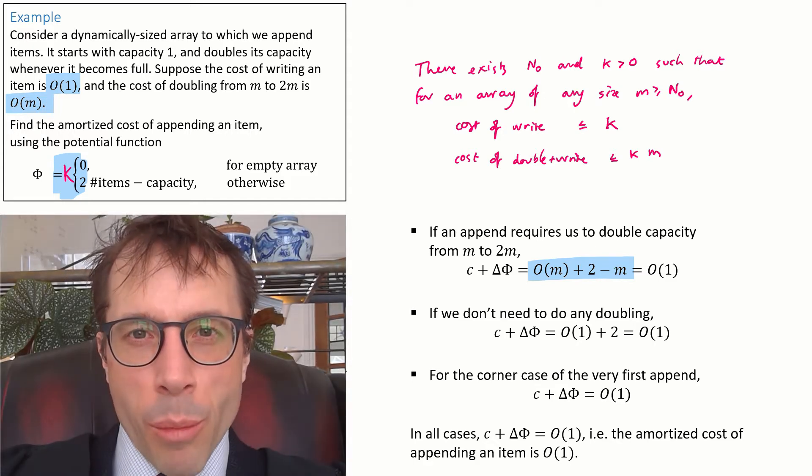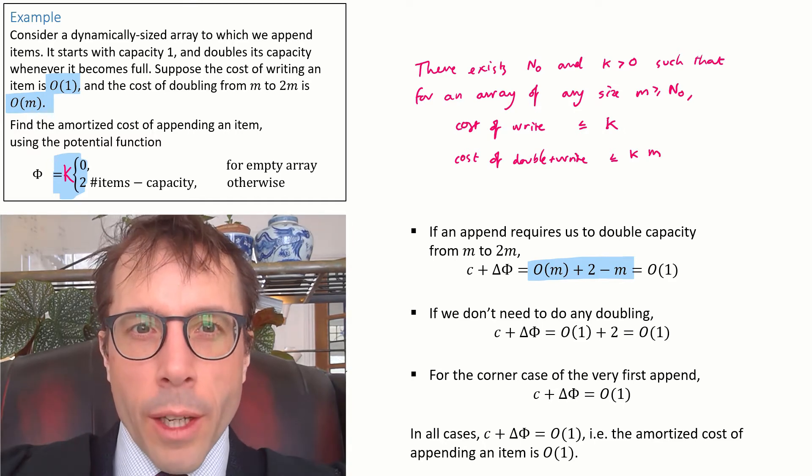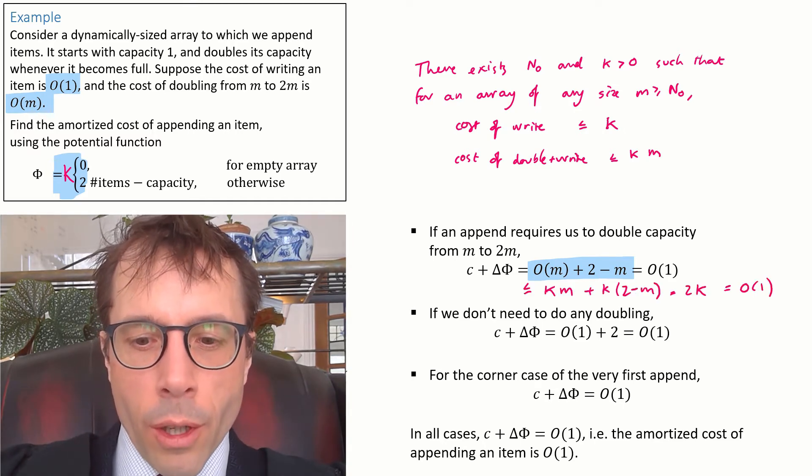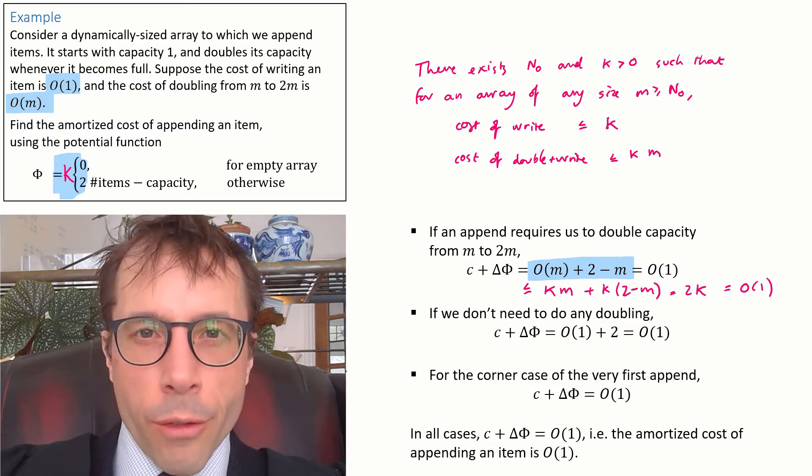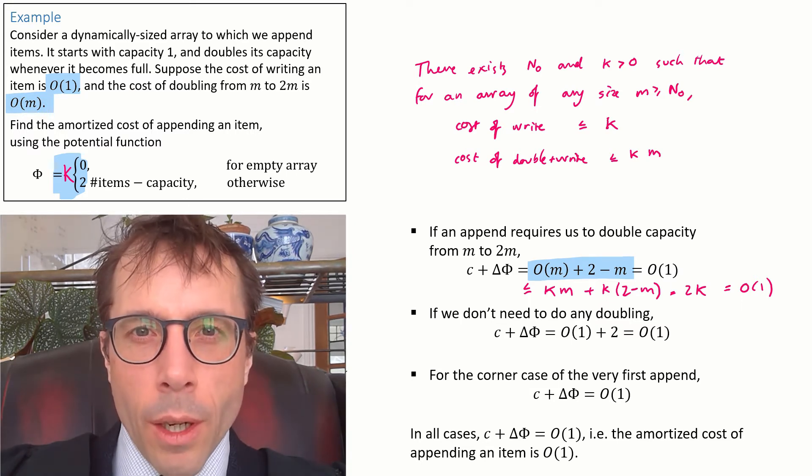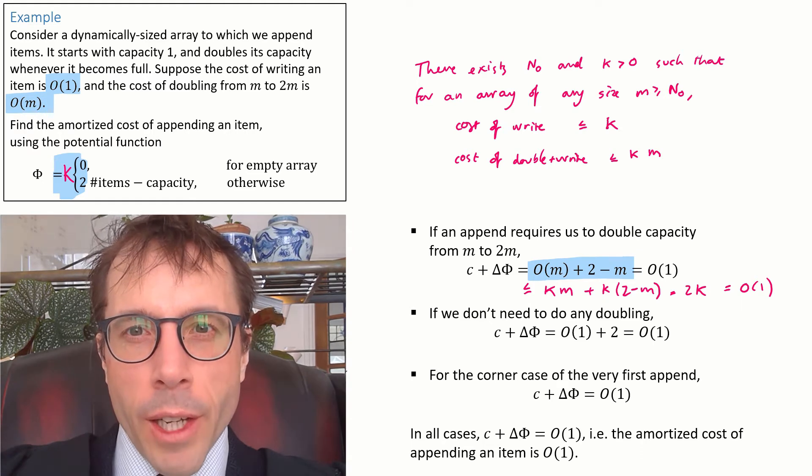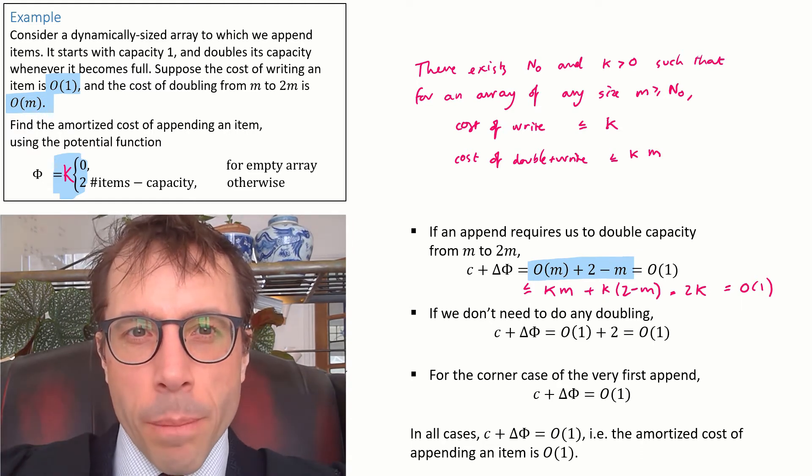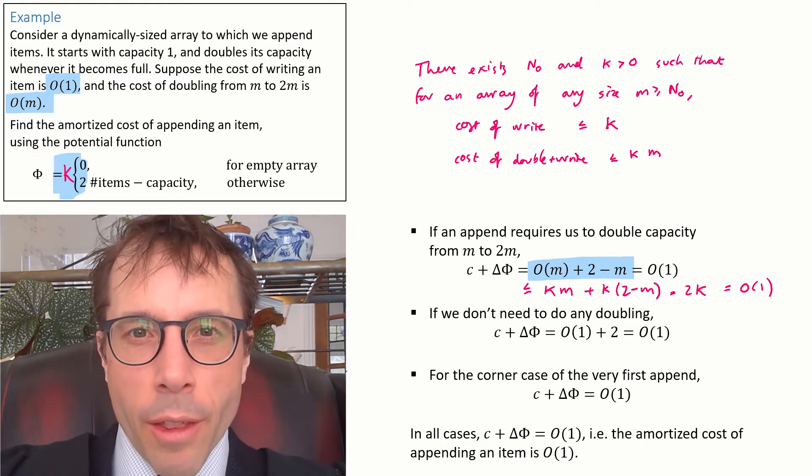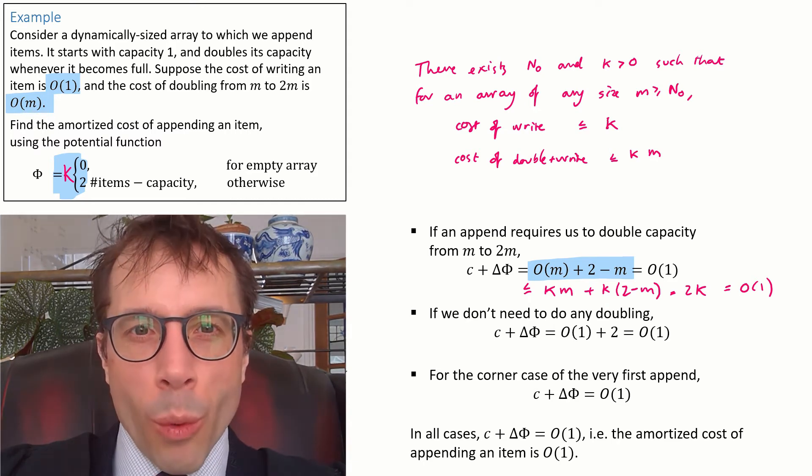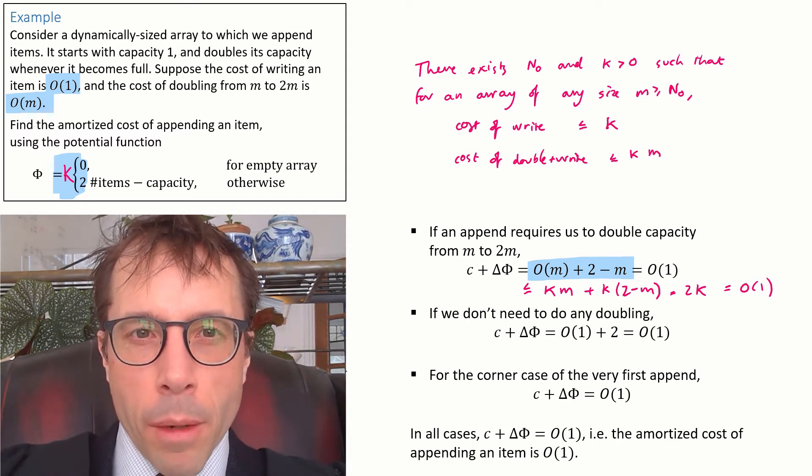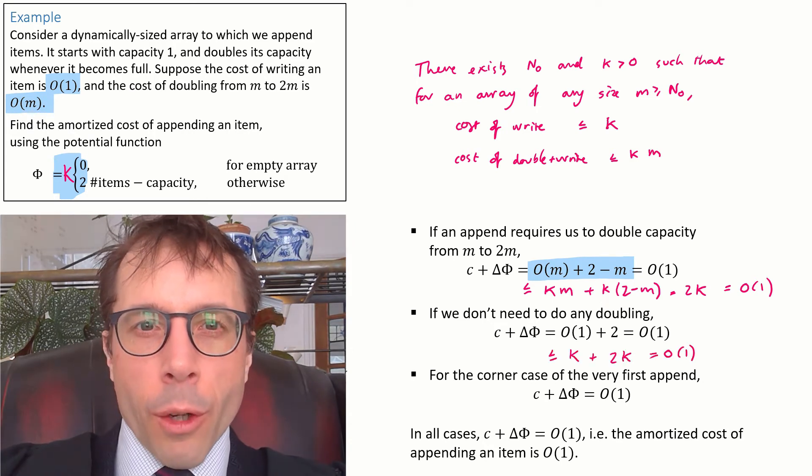Now we can write out the amortized costs properly and rigorously. The true cost is big O of m, i.e. the true cost is less than or equal to kappa times m, and the change in potential is delta phi equals kappa times 2 minus m. Now these two add together happily, and we're left with an answer that doesn't depend on m, and that's what we mean when we write that it's big O of 1. Likewise the next case.